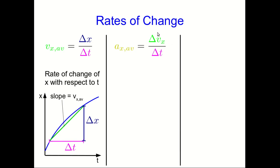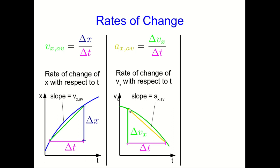Similarly, axav is a delta vx by delta t. So it's a rate of change of vx with respect to t. For each unit time, how much does the x component of velocity change by? And again, it can be thought of as a slope of a line connecting two points on the vx versus t graph. And because these are both slopes of lines connecting two points on the graph, they're average rates of change.